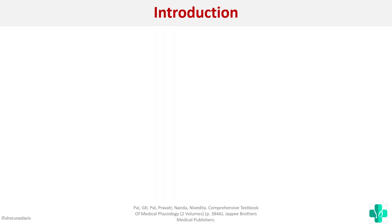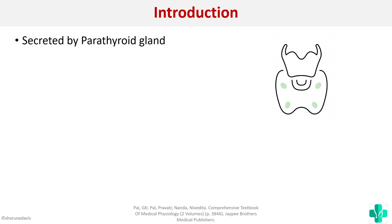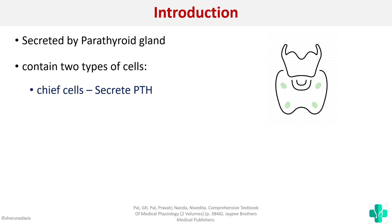You can start the answer with an introduction describing from where parathormone is formed. Parathormone is secreted by the parathyroid glands, which contain two types of cells: the chief cells, which secrete parathormone, and the oxyphil cells.